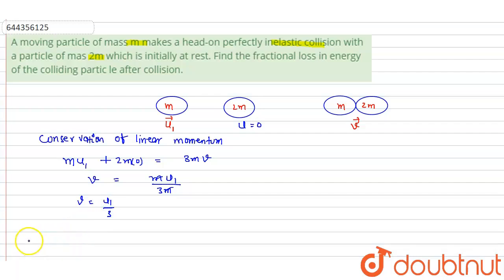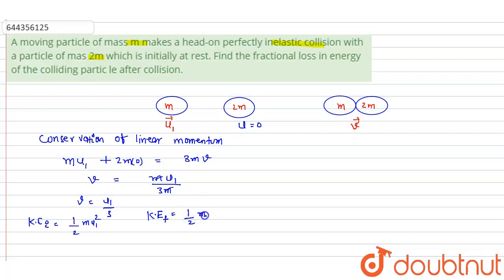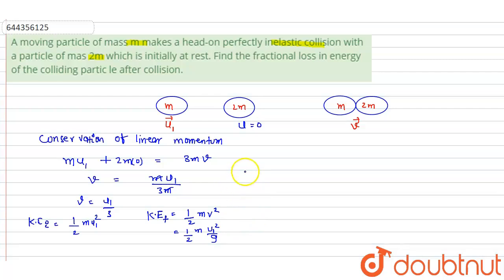Now, the initial kinetic energy Ki equals one-half m·u1². The final kinetic energy Kf equals one-half times 3m times v², and since v equals u1 over 3, we substitute to get Kf equals one-half times 3m times u1² over 9. This gives us Kf equals Ki over 9.